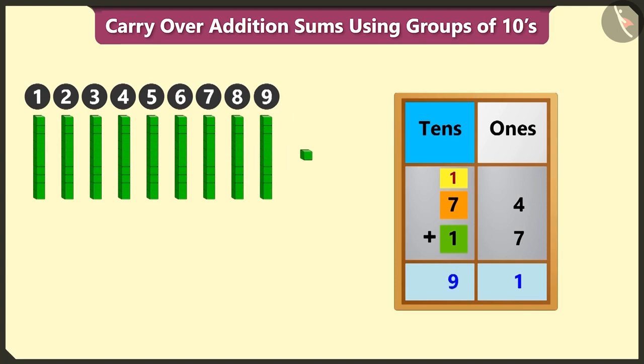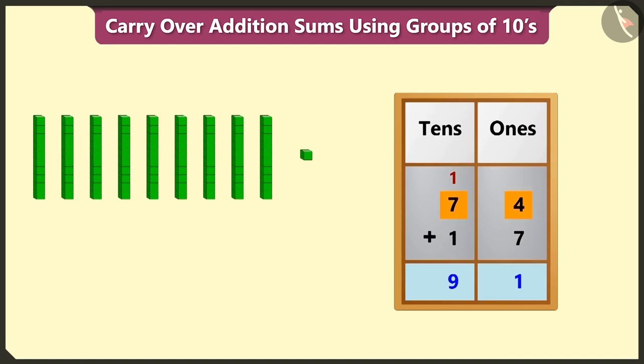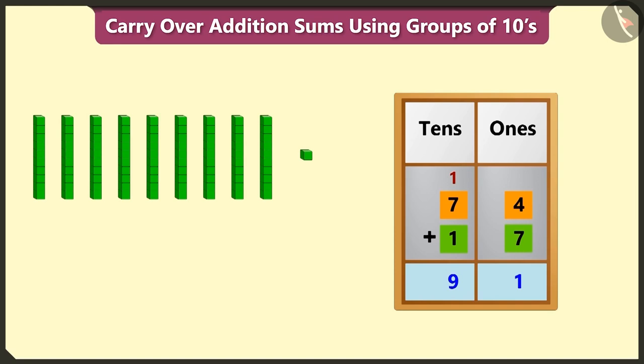So we have to write nine in the tens box. Seventy-four added to seventeen will give us a total of ninety-one.